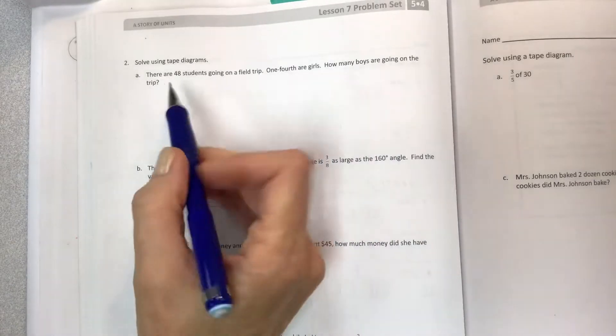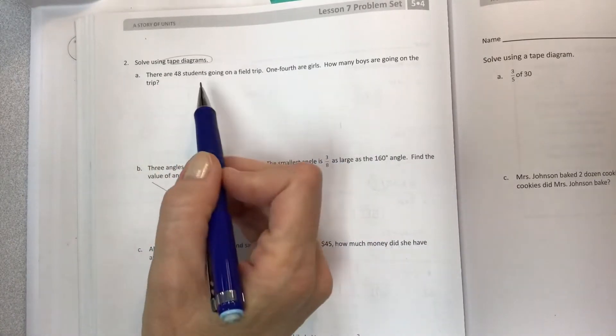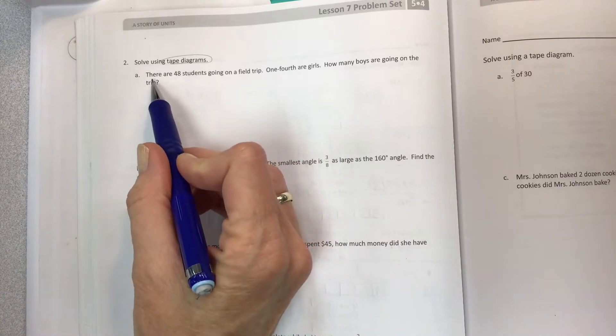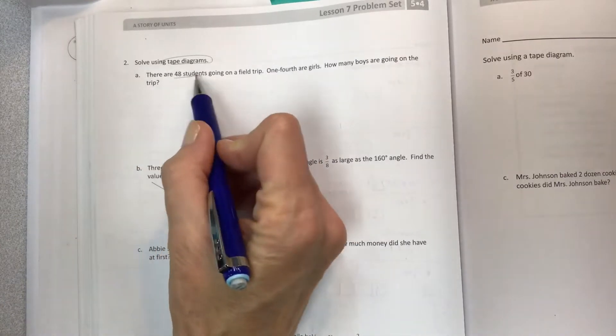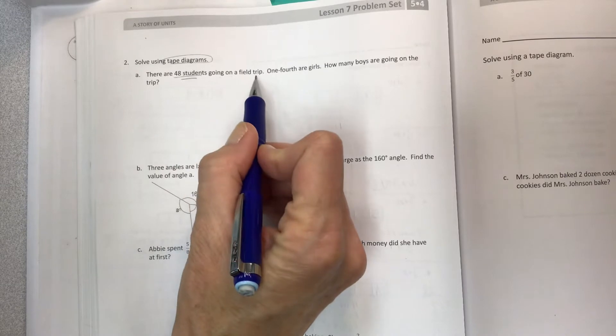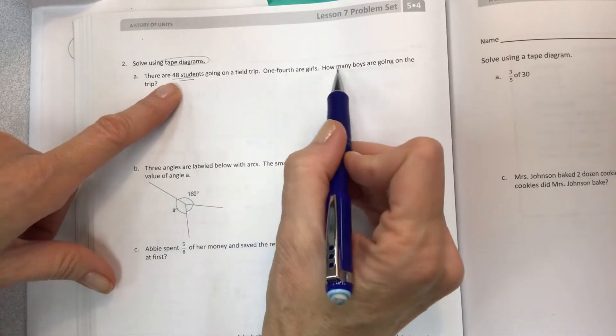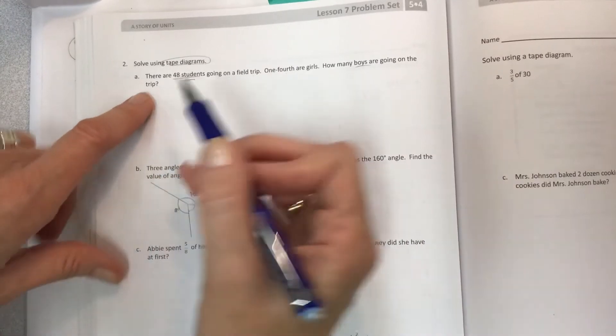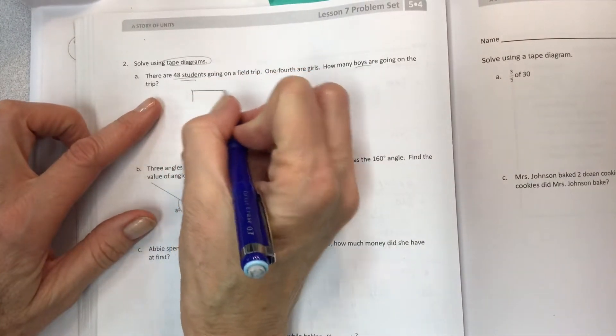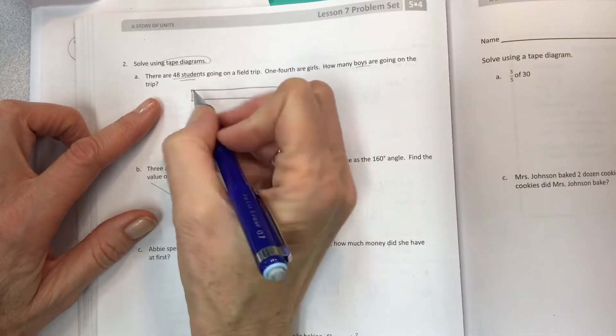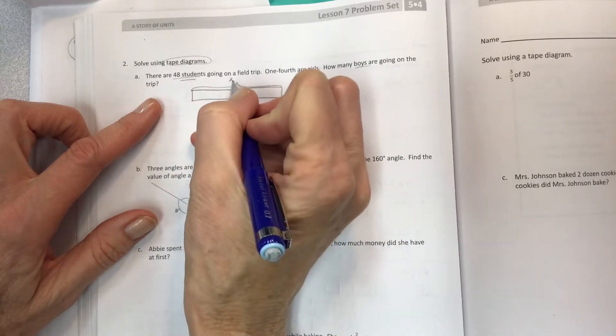We're using our tape diagrams to find a fraction of a number, so we're going to be drawing some tape diagrams. Let's get right to it. There are 48 students going on a field trip. One-fourth of the 48 students are girls. How many boys are going on the trip?